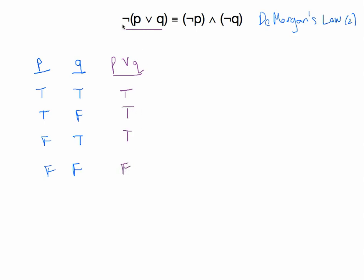Now I'm going to need a new column for the negation of that statement — not (P or Q). Just take P or Q and change the truth value. So false, false, false, true. That is the first statement involved here.